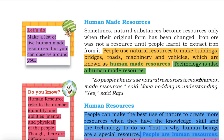Human-made resources. Sometimes natural resources become resources only when their original form has been changed. Iron ore was not a resource until people learned to extract iron from it. People use natural resources to make buildings, bridges, roads, machinery and vehicles, which are known as human-made resources. Technology is also a human-made resource. So people like us use natural resources to make human-made resources, said Mona, nodding in understanding.